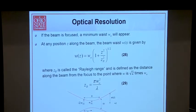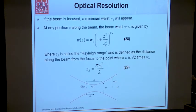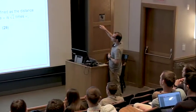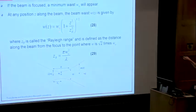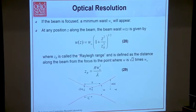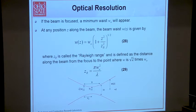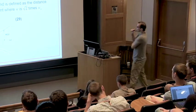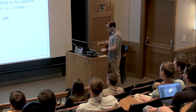With a TM00 Gaussian beam, a minimum waist W₀ will appear when focused. At any position Z in the propagating direction, the beam waist W(Z) can be determined via this equation using the minimum waist, Z, and Z_R — the Rayleigh range — defined as the distance along the beam from the focus to where W is √2 times the minimum waist. The Rayleigh range gives a characteristic of where the beam is in focus.